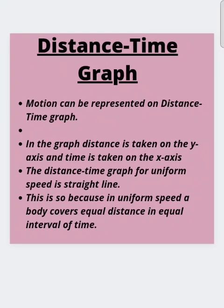Motion can be represented on a distance-time graph. In the distance-time graph, distance is taken on the y-axis and time is taken on the x-axis. The distance-time graph for uniform speed is a straight line, because in uniform speed a body covers equal distance in equal intervals of time.